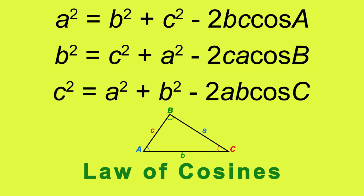C squared equals A squared plus B squared minus 2AB times the cosine of angle C.